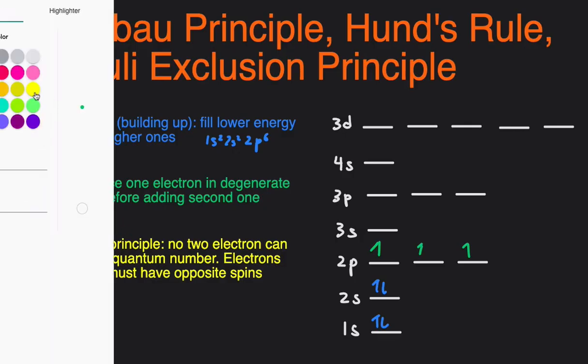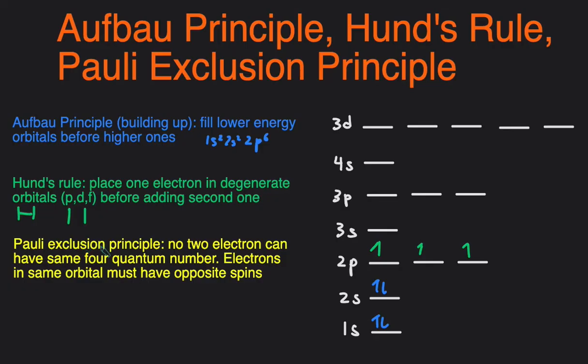All right, next one, Pauli Exclusion Principle. The Pauli Exclusion Principle states that no two electrons can have the same four quantum numbers, which translates to that electrons in the same orbital must have opposite spins.